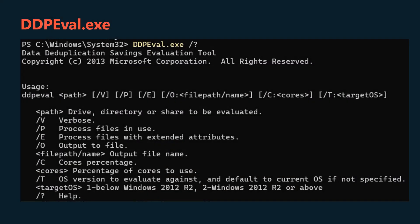Before enabling data deduplication for a workload, investigate how much duplication your workload's data set has by using the data deduplication savings evaluation tool, or DDPeval. After installing data deduplication, you can find this tool at C:\Windows\System32\ddpeval.exe. DDPeval can evaluate the potential for optimization against directly connected volumes including local drives, cluster shared volumes, and mapped or unmapped network shares. You need to have data deduplication installed for this tool to be available.